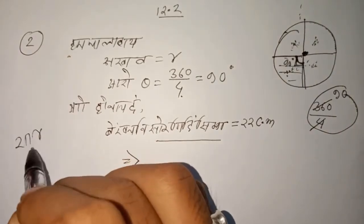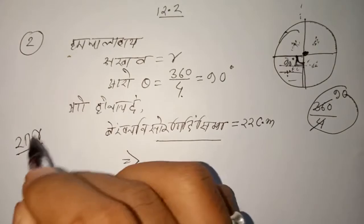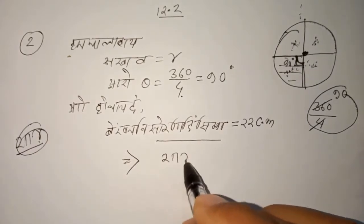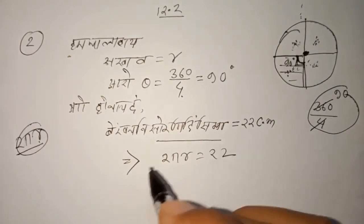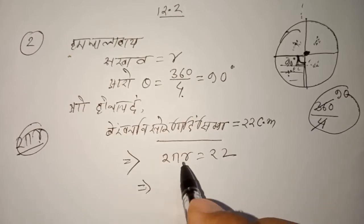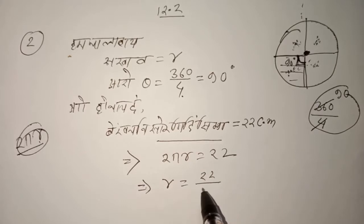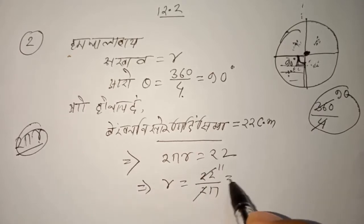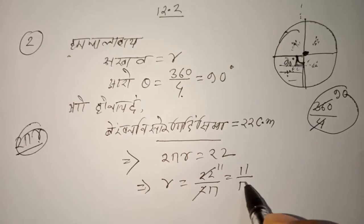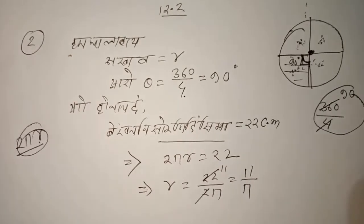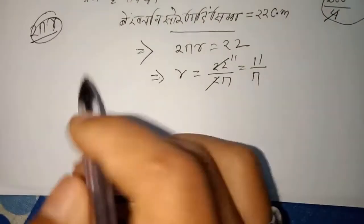The formula is 2 pi r. R is equal to — if we solve it, then we have 2 pi r equal to 22. We can write it as 2 pi r equal to 22, so r equals 22 divided by 2 pi, which simplifies to 11 divided by pi. We write this as r equals 11 pi.